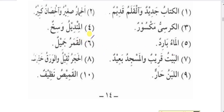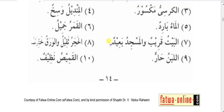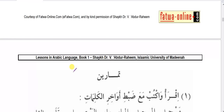More sentences: al-qamaru jamilun — the moon is beautiful; al-baytu qaribun — the house is close; al-masjidu baidun — the masjid is far; al-hajaru thaqilun — the stone is heavy; al-waraqqu khafifun — the leaf/page is light; al-labanu harun — the milk is hot; al-qamisu nazifun — the shirt is clean. Tamareen means exercise — it is the plural of tamrin.